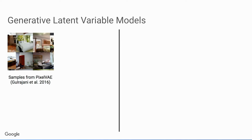Generative latent variable models are an expressive class of models that can represent complex distributions, for example natural images. I'm showing images generated by a Pixel VAE model trained on images of bedrooms, and you can see that it's able to generate very realistic-looking images.